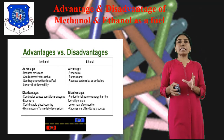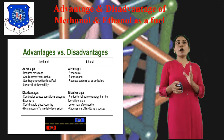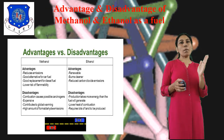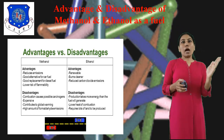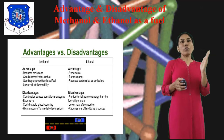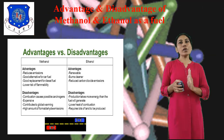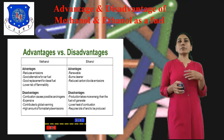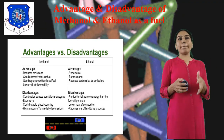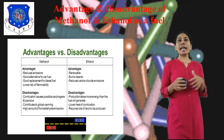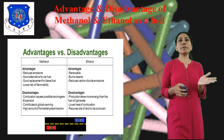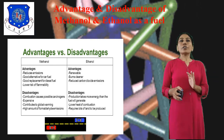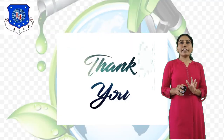Today we discussed the basic definition of alcohol, the basic chapter of biofuel — alcohol as a fuel — then Methanol and Ethanol, their various properties, applications, and advantages and disadvantages of Methanol and Ethanol fuel. Thank you.